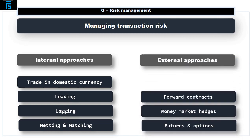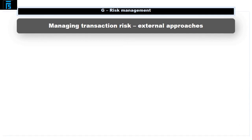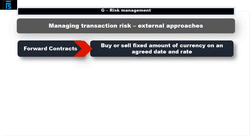External approaches include forward contracts, money market hedges, and futures and options, discussed in more detail below. Forward contracts are an agreement to buy or sell a fixed amount of currency on an agreed date at a rate that is agreed now. They work in exactly the same way as an exchange at spot, however there is usually a larger spread between the buy and sell rates quoted. They are easy and quick to arrange, available in many currencies, and available for more than a year ahead. Conversely, they are non-cancellable, have to be honoured on a specific date, and the rates quoted may be unattractive.